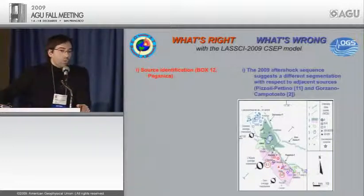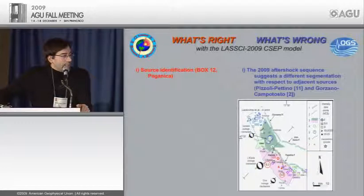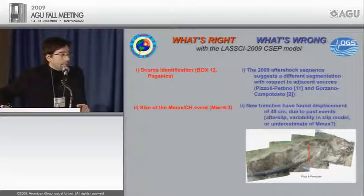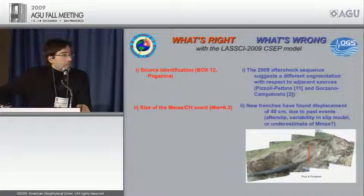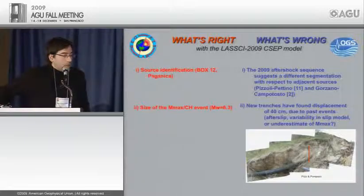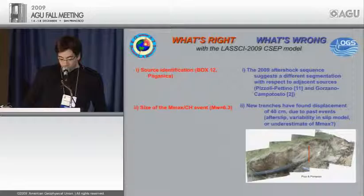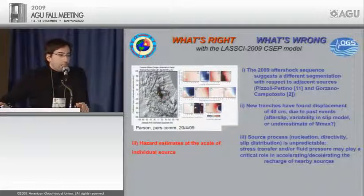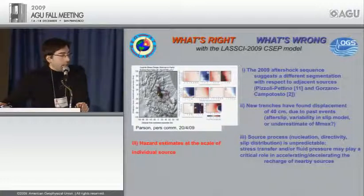What was still wrong in the 2009 model? The aftershock sequence suggests a different segmentation, so we need to review the segmentation pattern. The maximum magnitude estimate is consistent with L'Aquila, but new trench data found displacements of 40 centimeters — raising questions about whether this is after-slip, slip model variability, or underestimation of the characteristic event. The hazard estimate at individual sources is correct, but our model cannot account for nucleation, directivity, slip distribution, stress transfer, or fluid pressure effects on nearby sources.